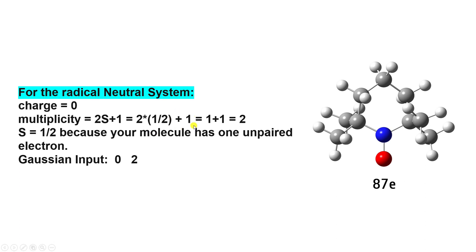Calculating 2 × (1/2) equals 1, and adding the plus 1 we get 2. So the spin multiplicity for a radical neutral system is 2. In the Gaussian input file you have to mention zero charge and spin multiplicity 2 for this kind of calculation.